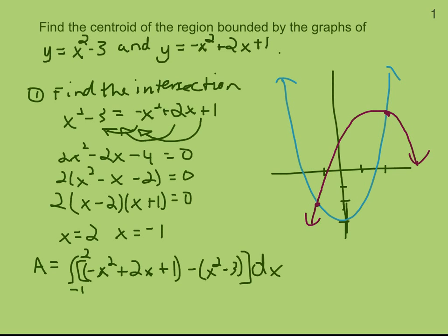And so that's going to be the integral from negative 1 to 2 of negative 2x squared plus 2x plus 4.